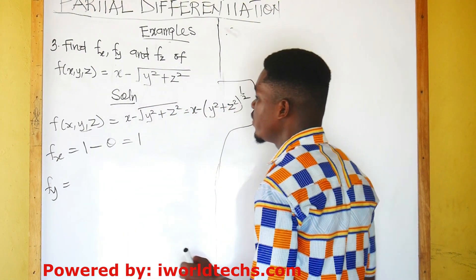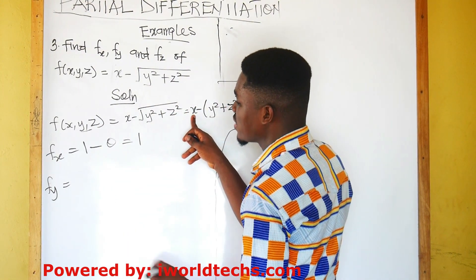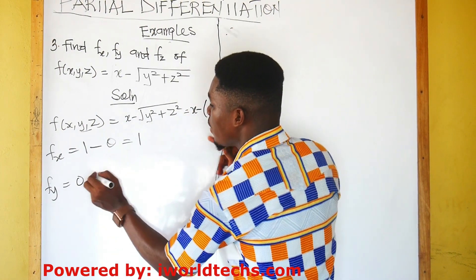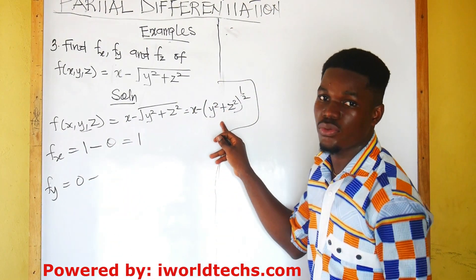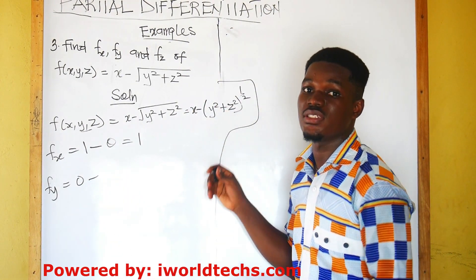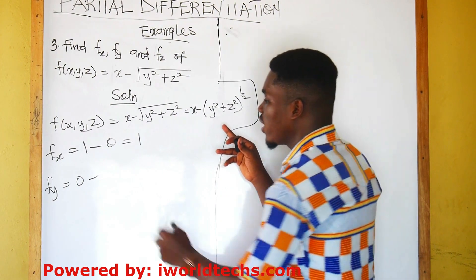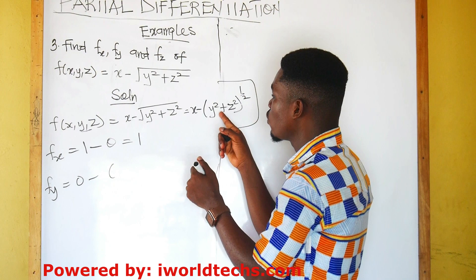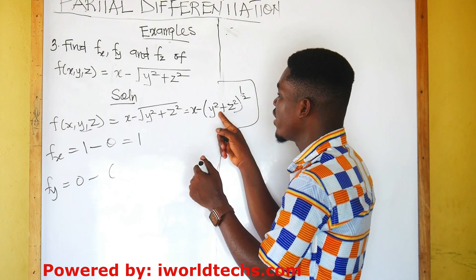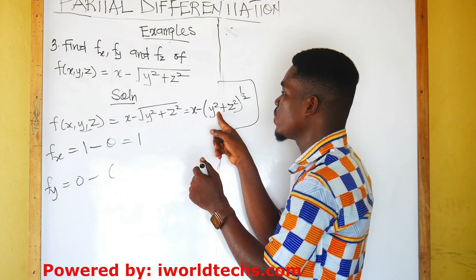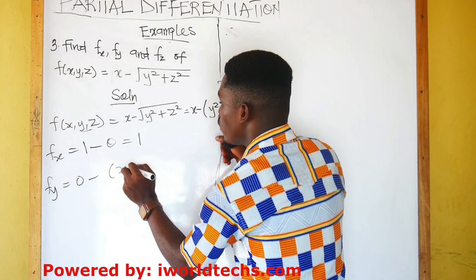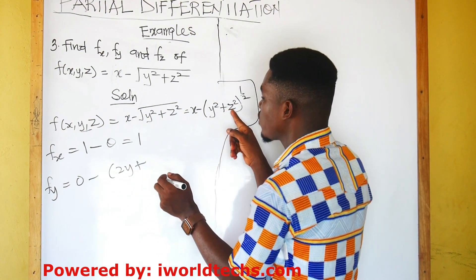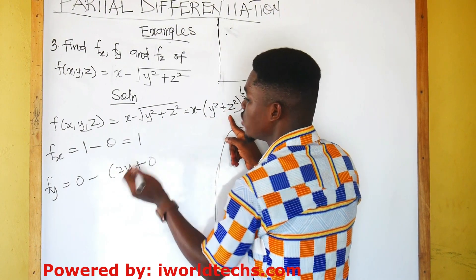The partial derivative of this function with respect to y is given by: x is held constant, so this will be 0 minus... When we come to this part, we apply the chain rule. Let's first differentiate what is in the bracket. The partial derivative of y squared with respect to y is 2y, and z squared gives 0 since z is held constant.